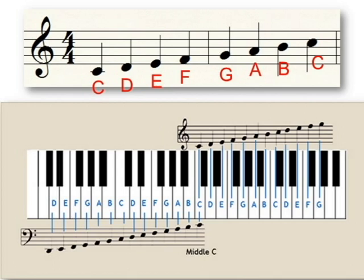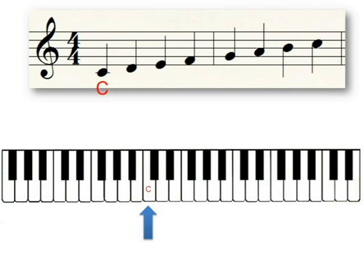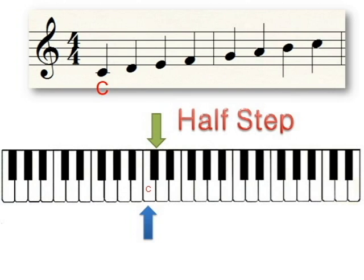Each pitch on the keyboard is exactly one half step apart. Thus, if we start on the white note C and raise the pitch by one half step, we would play the black note directly to the right.